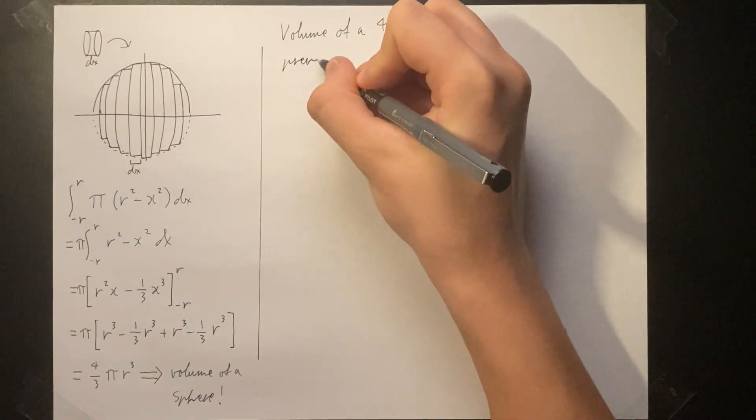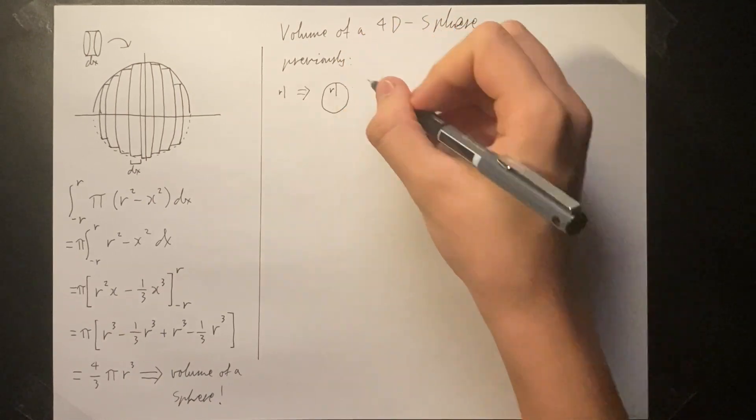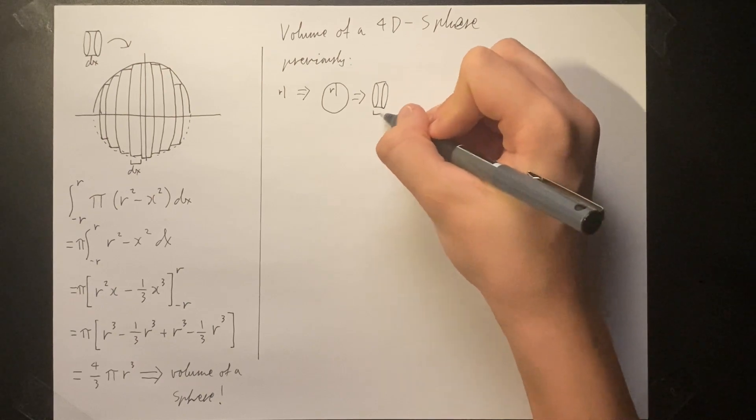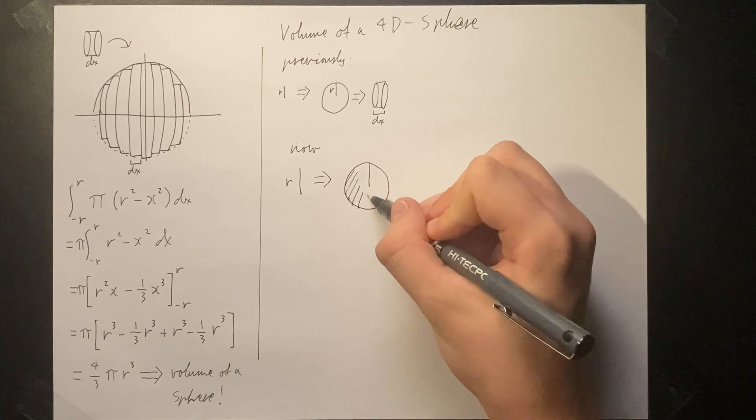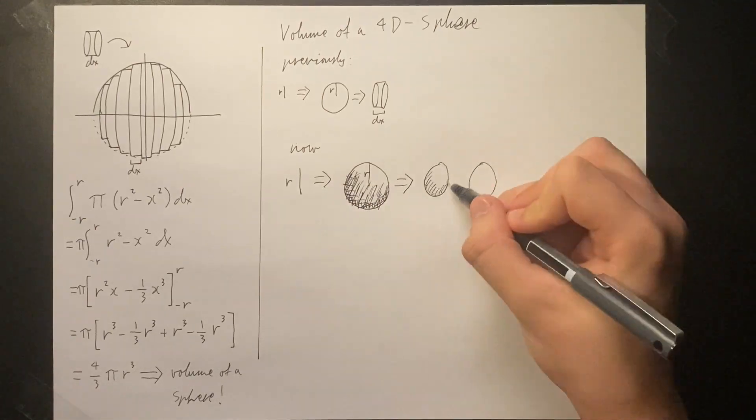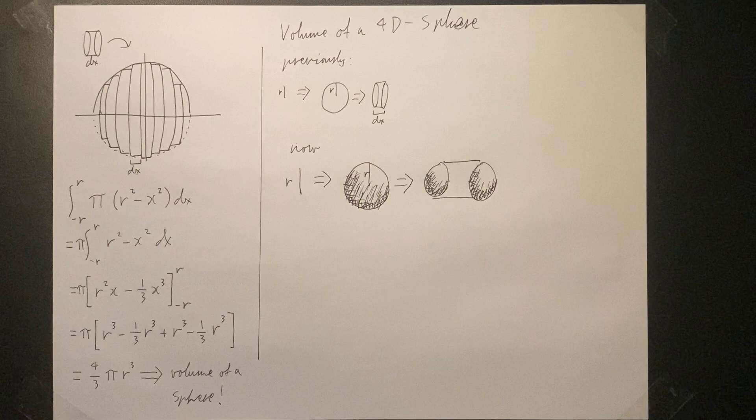Now comes the really interesting part. Previously, we rotated the function into circles and multiplied by dx to make cylinders. Now instead of rotating the function into circles, we can rotate it into spheres.